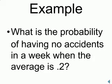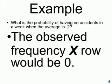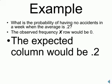Here is an example. What is the probability of having no accidents in a week where the average is 0.2 accidents? The observed frequency, the x-row, would be zero to represent no accidents. The expected column would be 0.2.